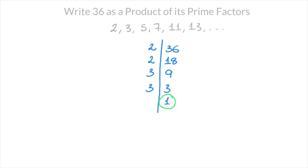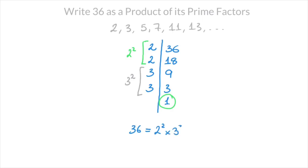Now that we've done that, we're in a position to write 36 as a product of its prime factors. The key is to look at the left-hand column. The numbers there tell us that 36 equals 2 times 2 times 3 times 3. Since 2 times 2 is 2 to the power of 2, and 3 times 3 is 3 to the power of 2, we can state that 36 equals 2² times 3². And we're done — we've just written 36 as a product of its prime factors.